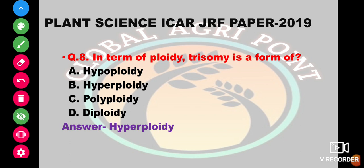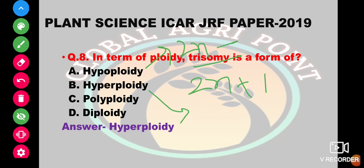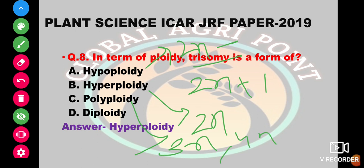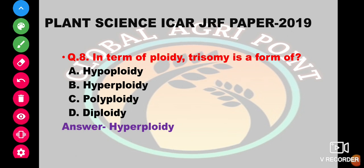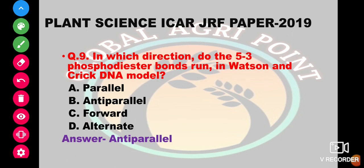In terms of ploidy, trisomy means 2n plus one chromosome. Hyperploidy means more than 2n chromosomes. Hypoploidy means less than 2n chromosomes. Polyploidy means an increase in the entire set of chromosomes. Diploidy is 2n chromosomes. So the answer is hyperploidy.